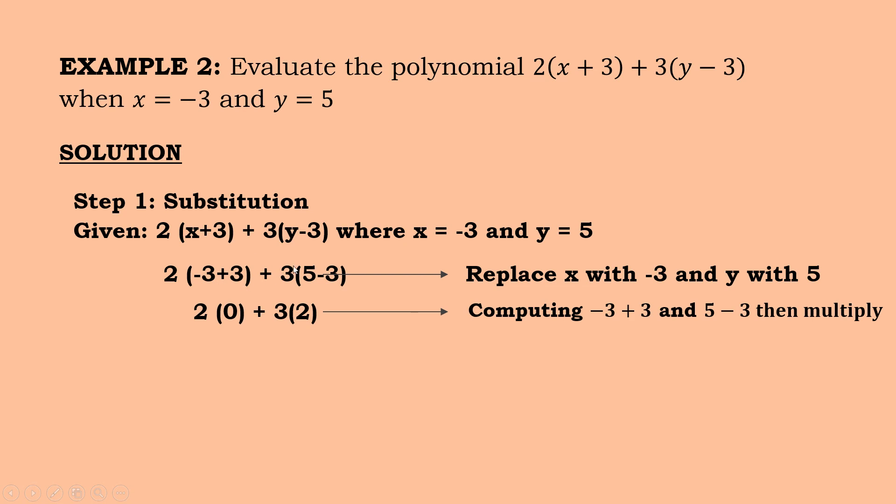Next is, we operate all that's in the parentheses. So we'll follow the PEMDAS. We have to operate the numbers inside the parentheses. So since negative 3 plus 3 is in the parentheses, we'll compute it. So negative 3 plus 3, meaning 0. So 5, we'll operate, minus 3, since it's inside the parentheses. So 5 minus 3, we have here 2.